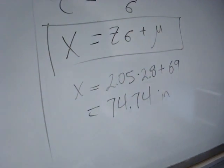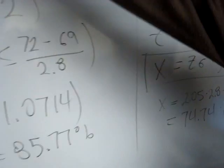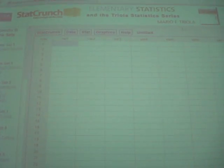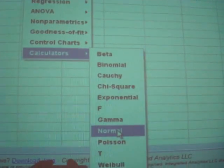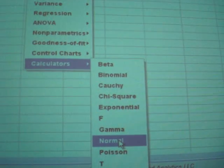You could also use StatCrunch to do this. So we'll let the projector roll up for a second. And what I've done is gone ahead and brought up the StatCrunch page, remember there's a link in your Moodle home page to this. And so if I go to Stat, Calculators, and Normal, this is going to calculate normal probabilities and so forth.